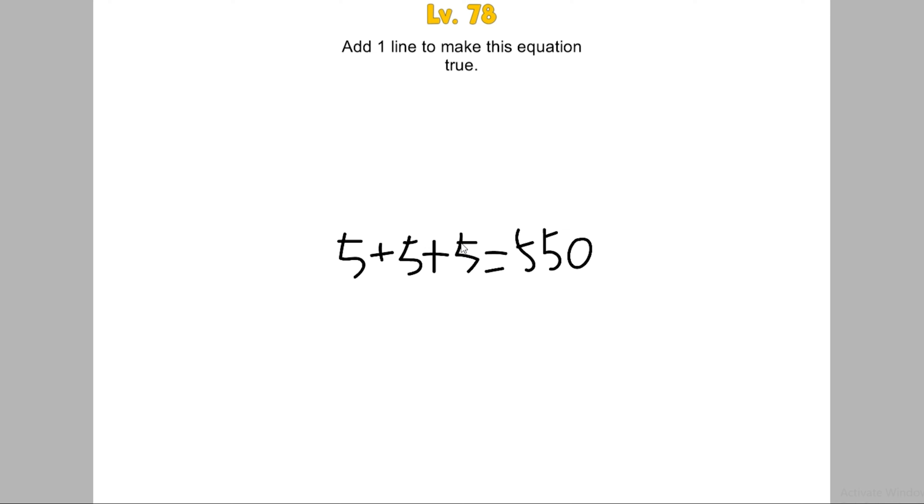5 plus 5 plus 5 equals 550. But 5 plus 5 plus 5 equals 50. So it means I have to change something. And 5, 5, 5, 5 plus 5, I have to make this plus into four.